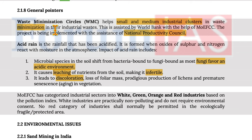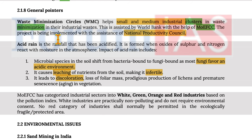Waste Minimization Circles help small and medium industry clusters in waste minimization of industrial waste. This is assisted by the World Bank with support from the Ministry of Environment, Forest and Climate Change, and is being implemented with assistance from the National Productivity Council.